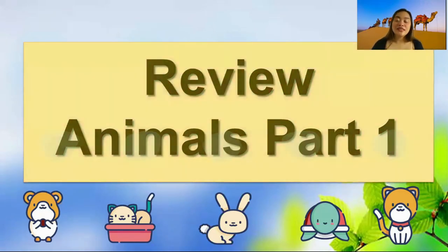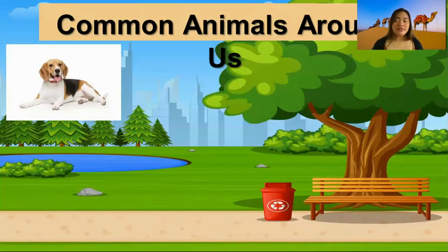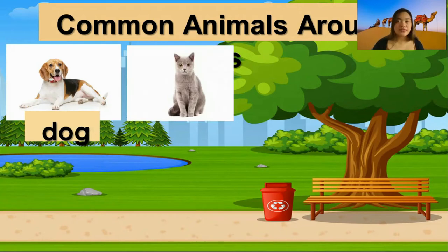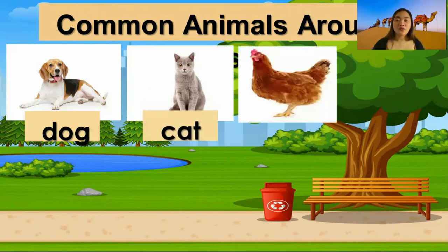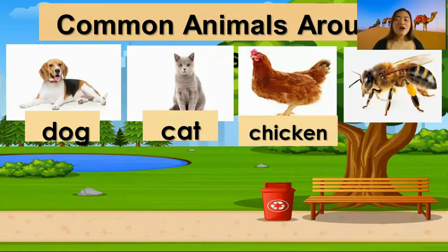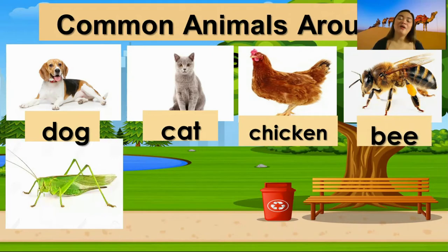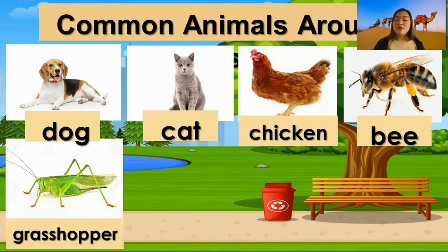Let's start with this one. What animal is it? It is a dog. How about this one? It is a cat. Very good. How about this one? It is a chicken. How about this one? It is a bee. And this one? It is a grasshopper.